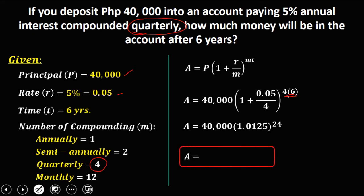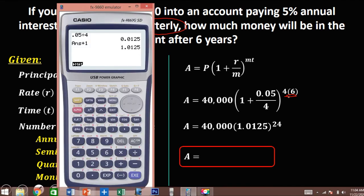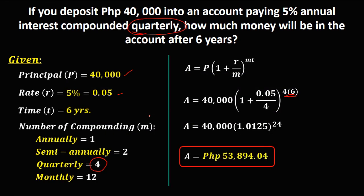So the future value now, we have 1.0125 to the power 24 equals 10 times this 40,000. So the future value is 53,894.04 pesos.